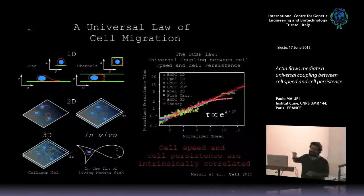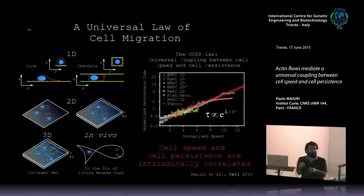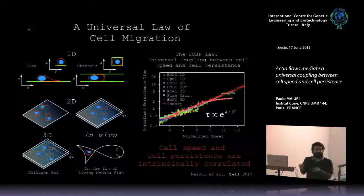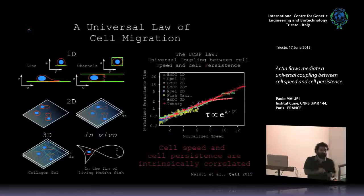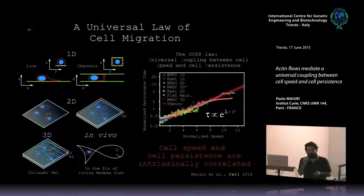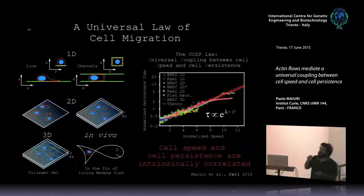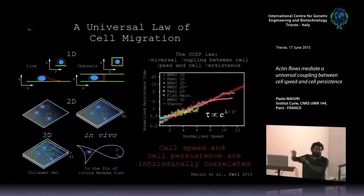We see that two parameters we can think a priori independent are de facto intrinsically correlated. What we see here is that it's not a population of cells that moves faster that is also more persistent, but each time a cell is moving faster it will go more straight. It's kind of inertia, but you have to think that at this scale inertia doesn't exist.